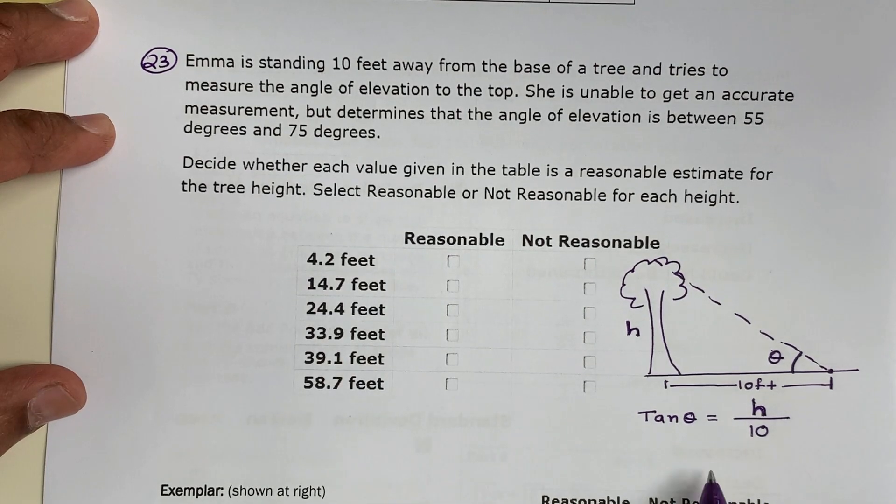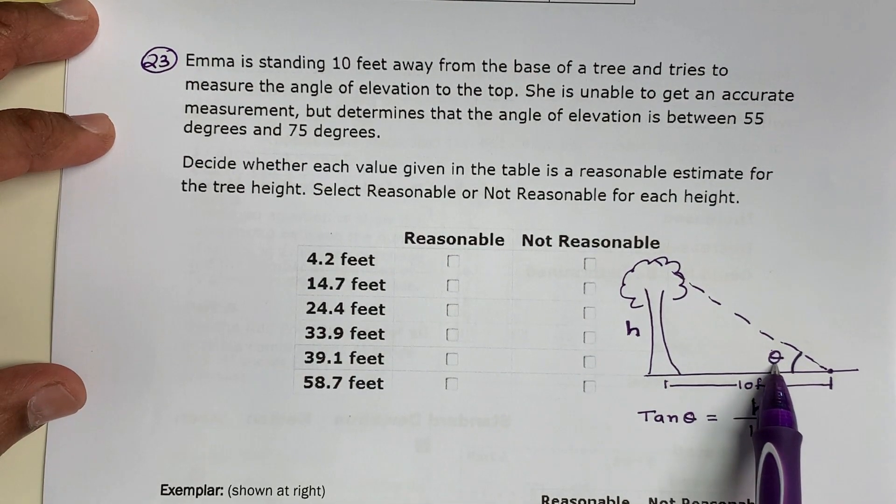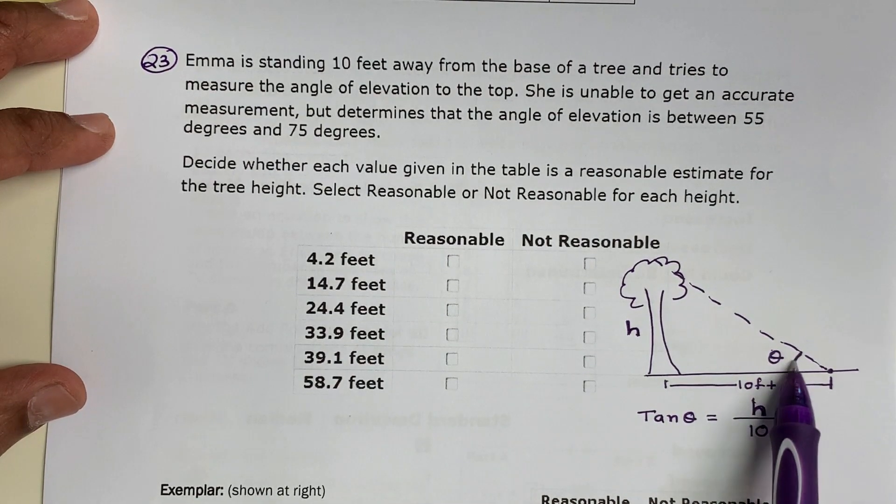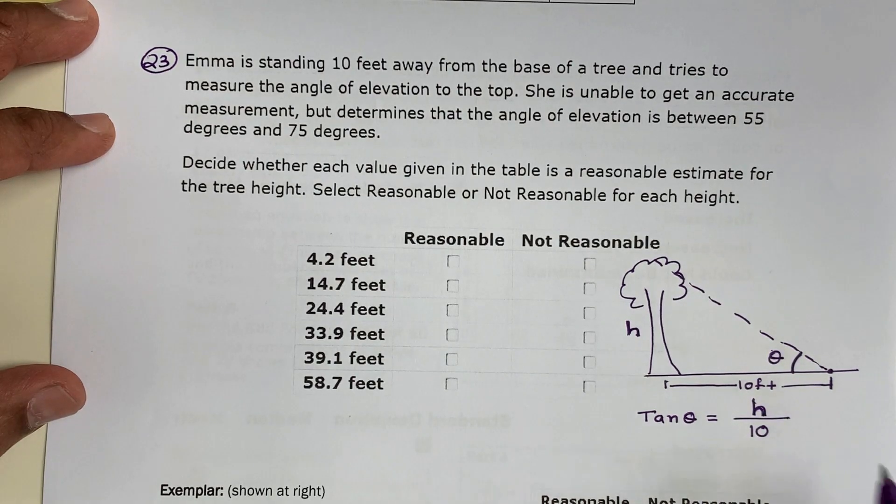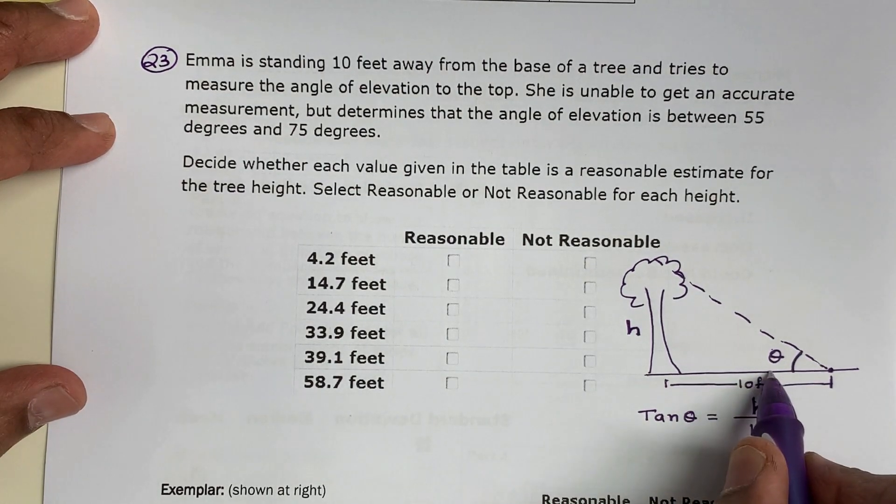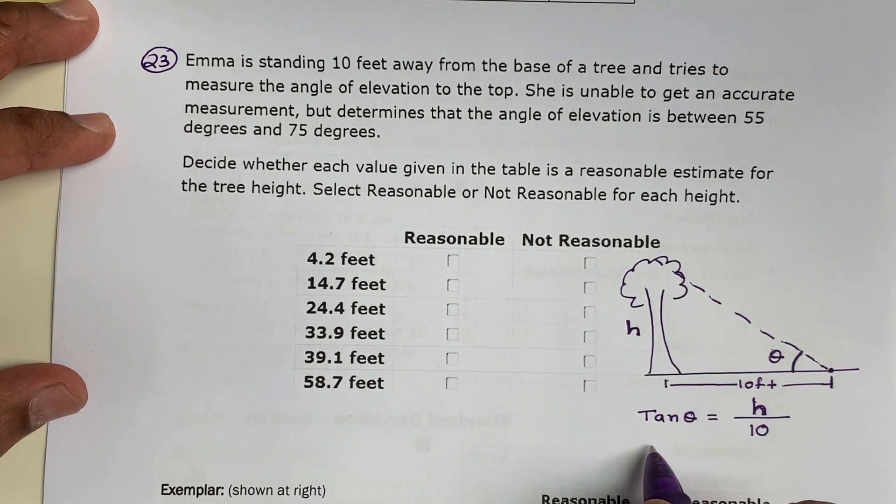Emma doesn't know what that angle is, but she thinks it's between 55 and 75. So I'm going to try both out. I'm going to try the lowest end of her guess, which is 55, and I'll try 75.